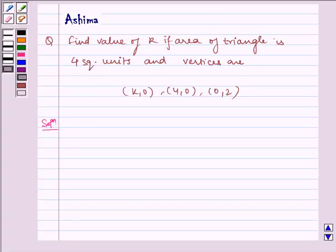Hello and welcome to the session. Let us understand the following problem today. Find value of k if area of triangle is 4 square units and vertices are k,